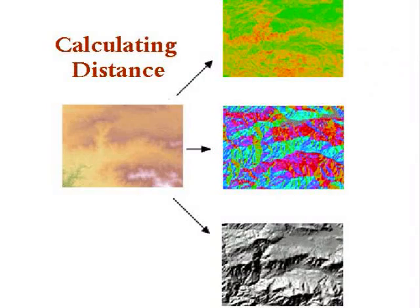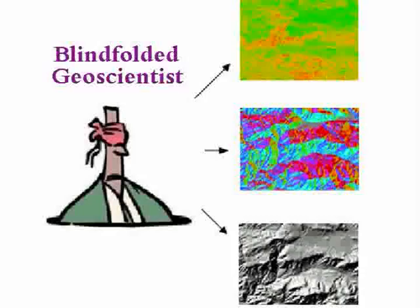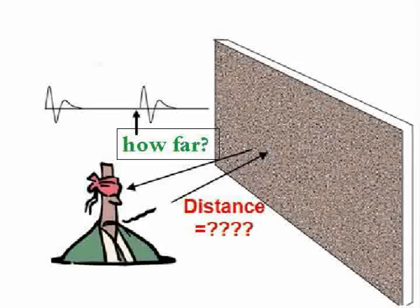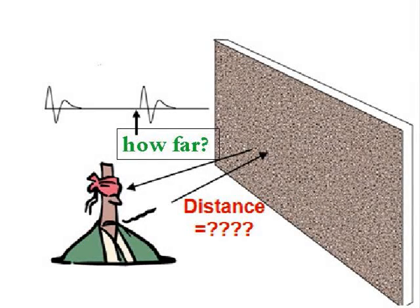Let's look at how we can calculate distance for instance. Here we have a blindfolded geoscientist who wants to know how far away a wall is. By having him use only his ability to hear these sound waves, let's see how he can figure out how far away that wall is.